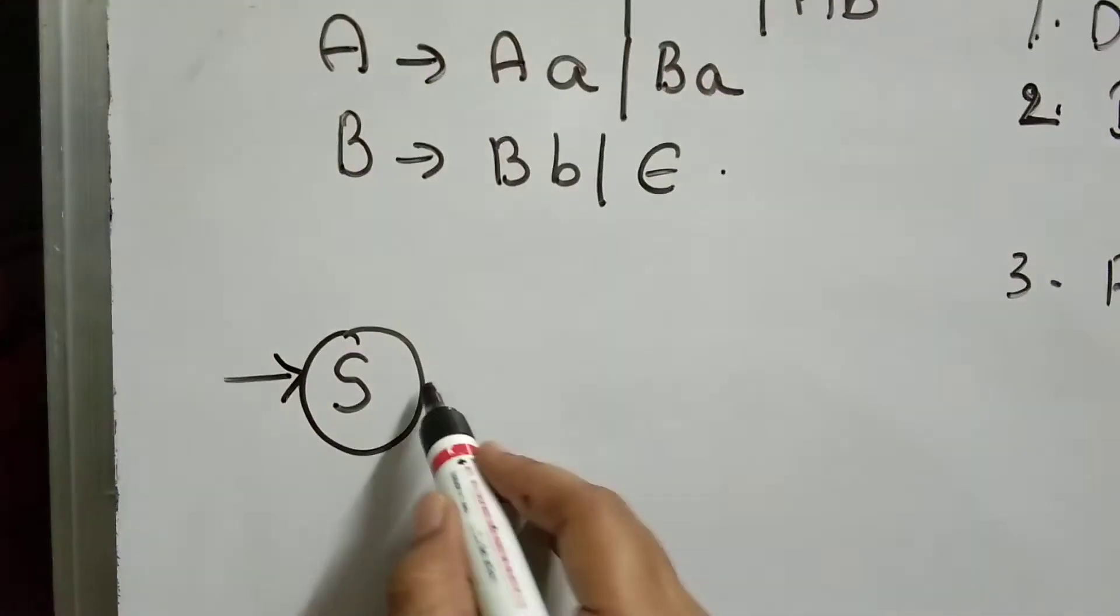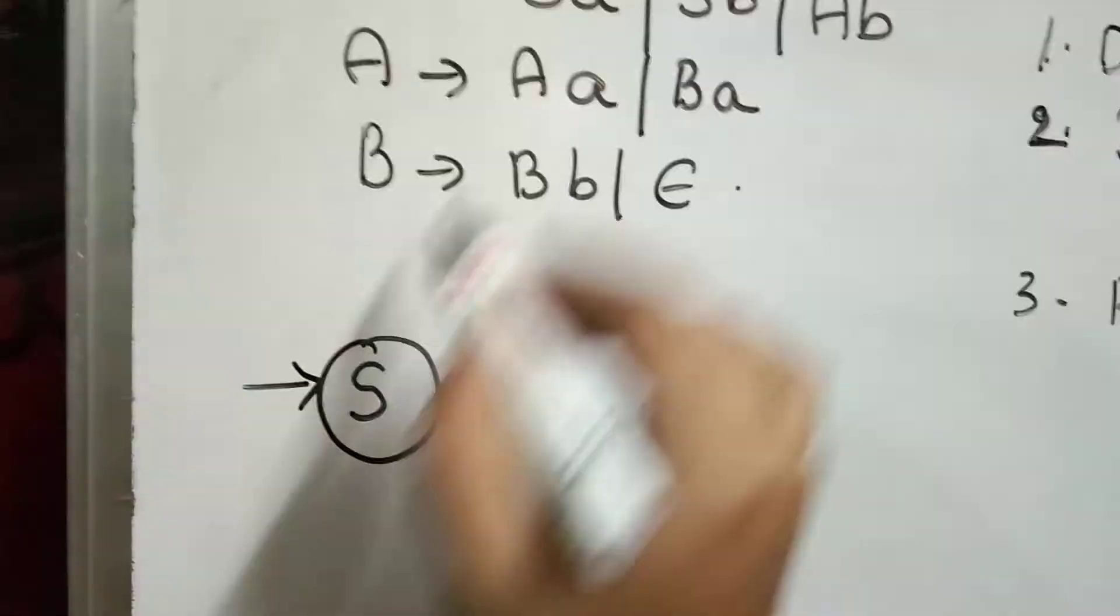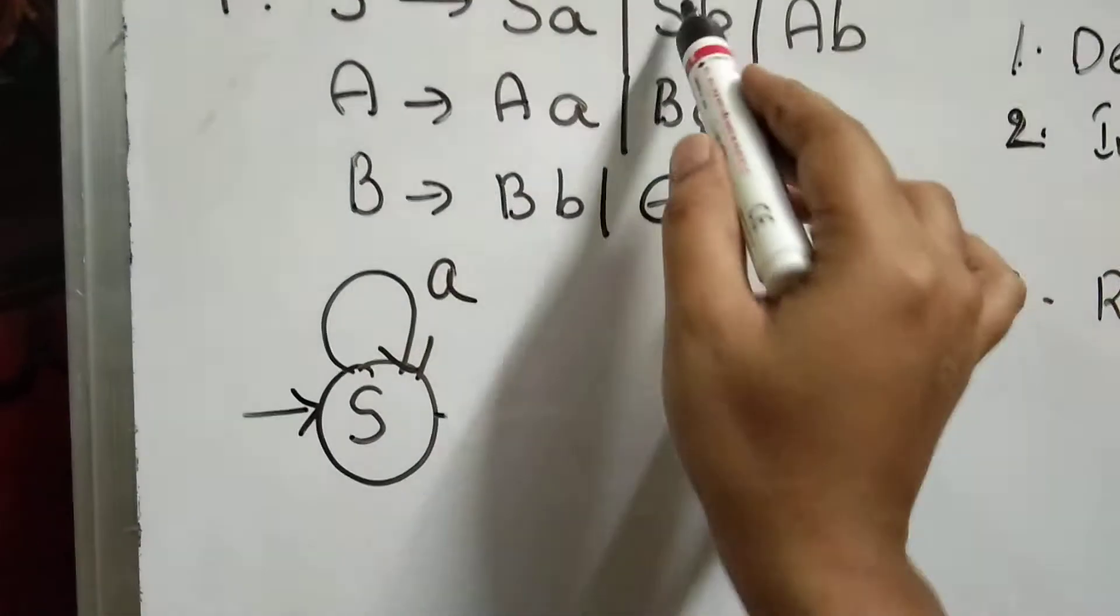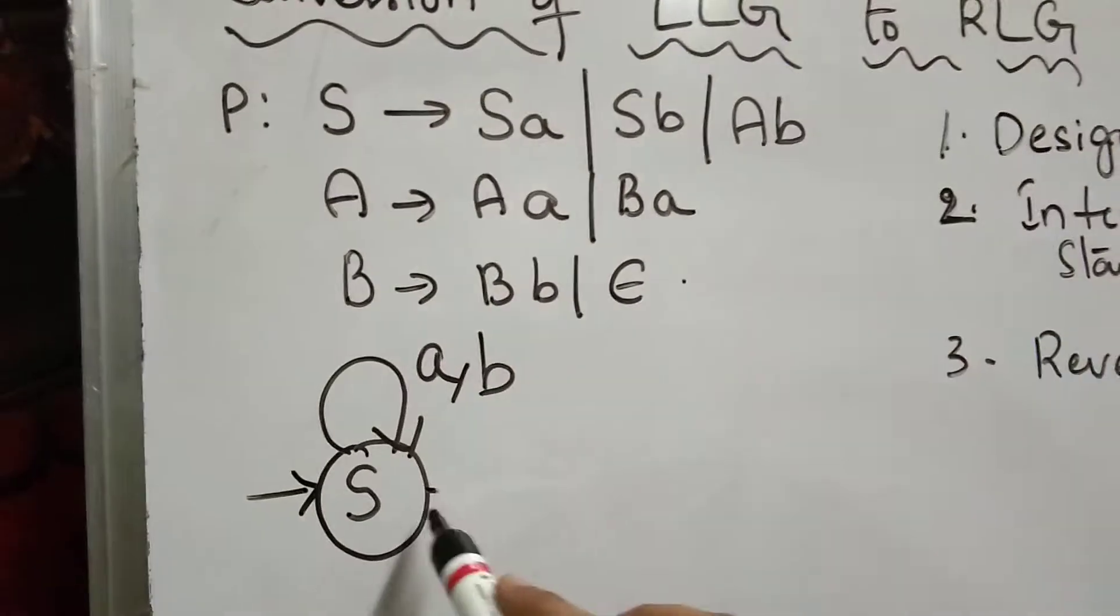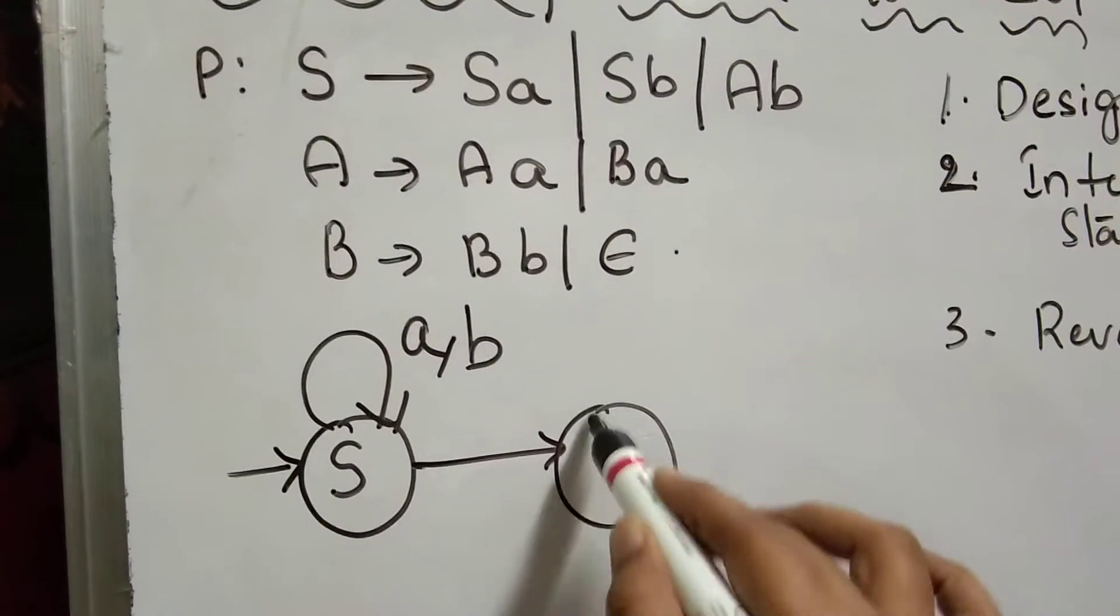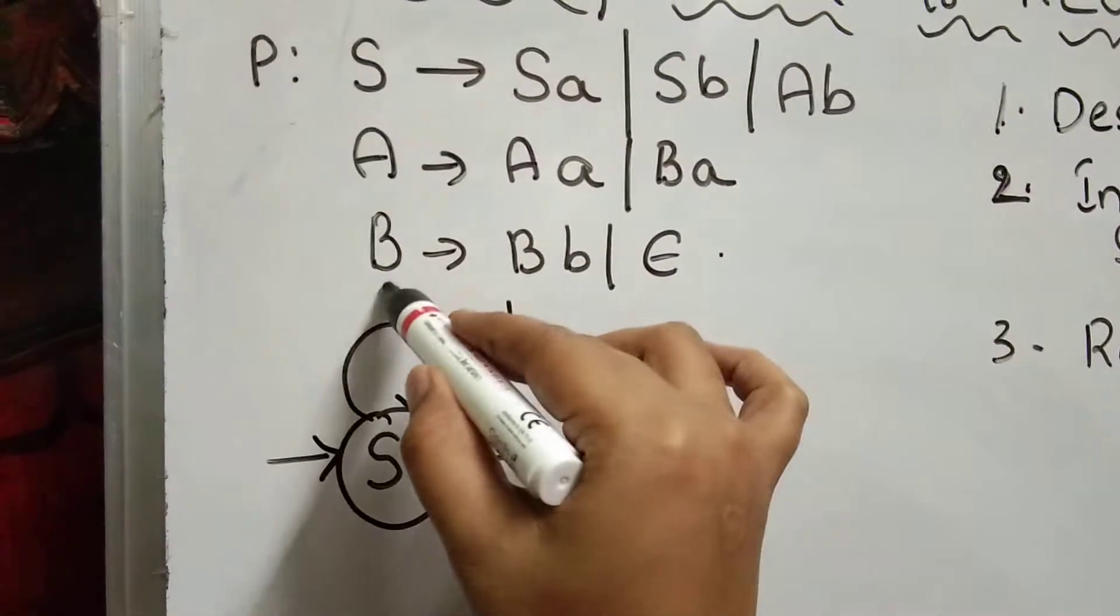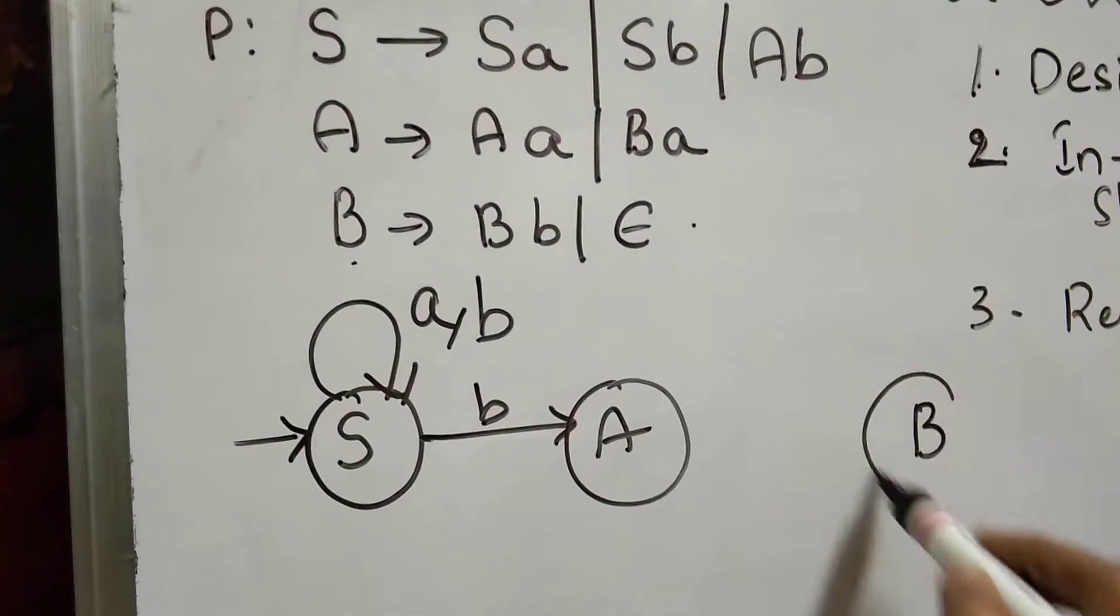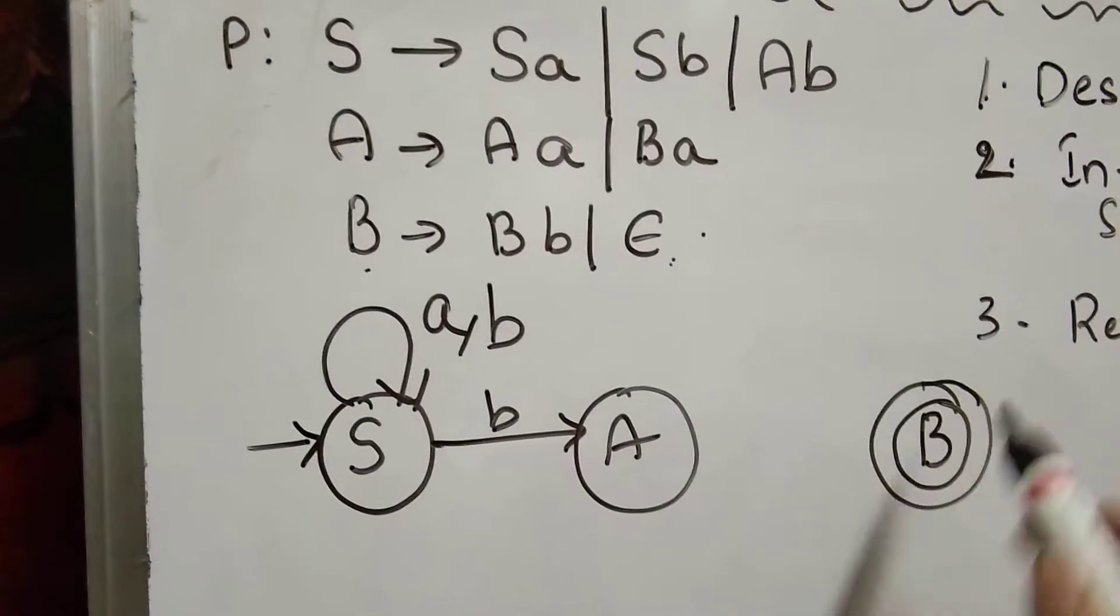Starting with state S, we have state A. From A we reach state B with input B. These states have epsilon, making it a final state.